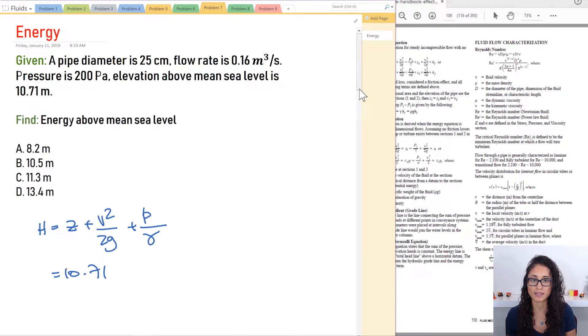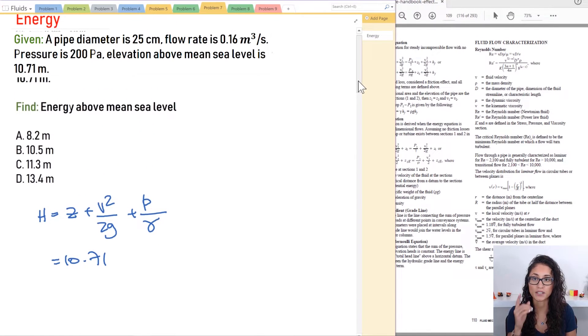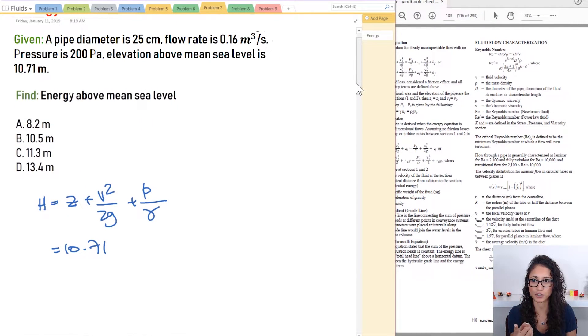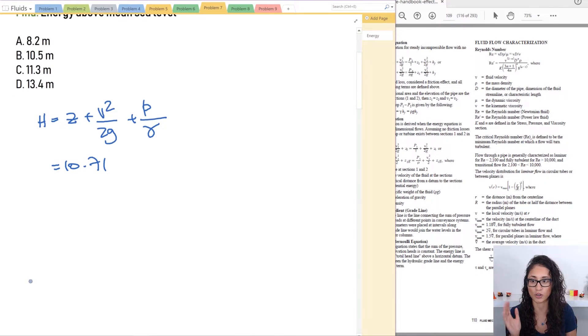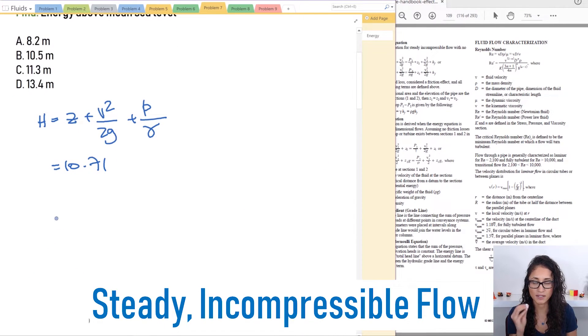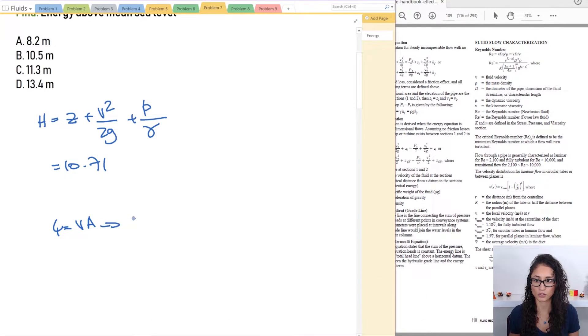Now we need to calculate V. But we were given the flow rate and the diameter so we can easily calculate for it. So because we have a steady incompressible fluid, Q is equal to VA. So V is equal to Q over A.